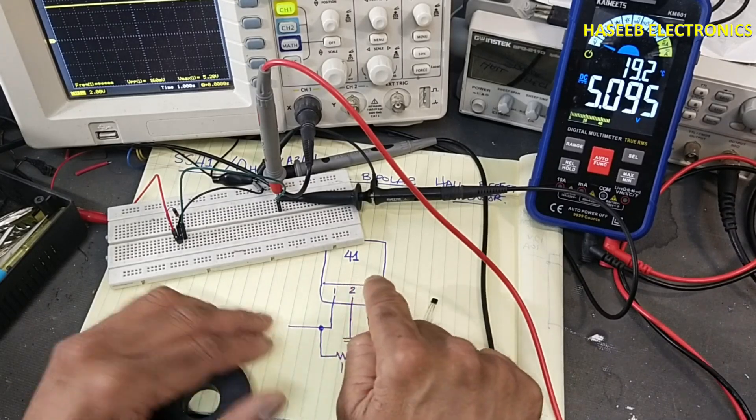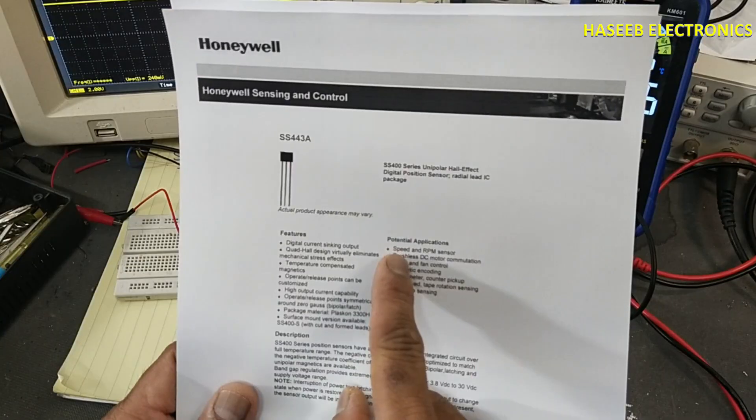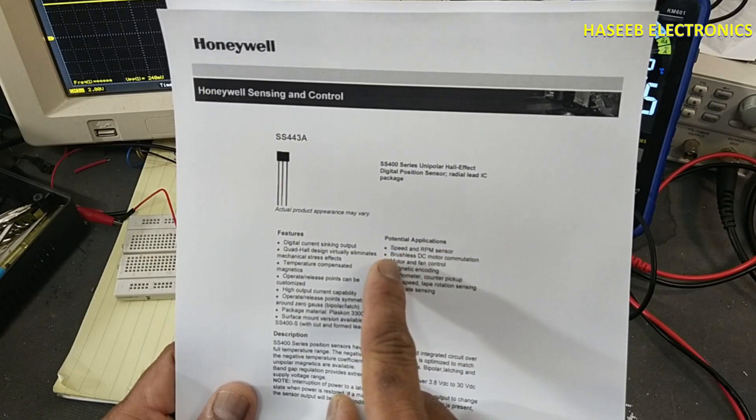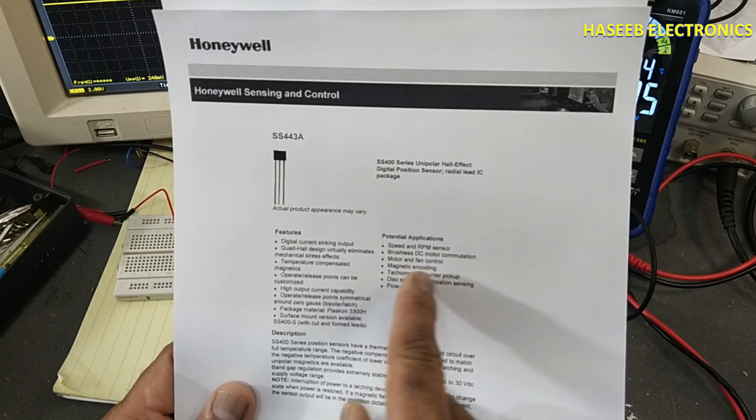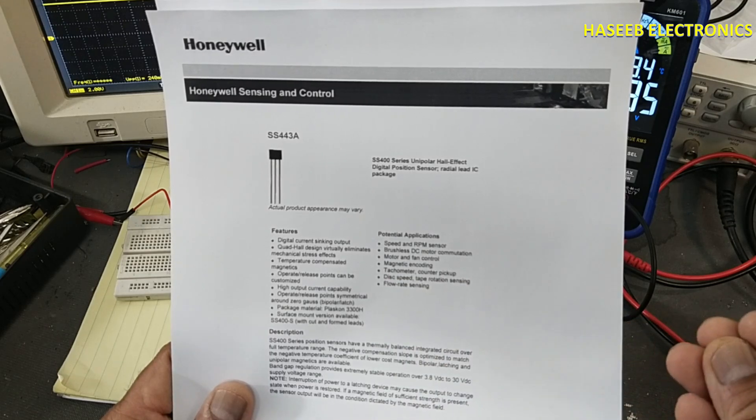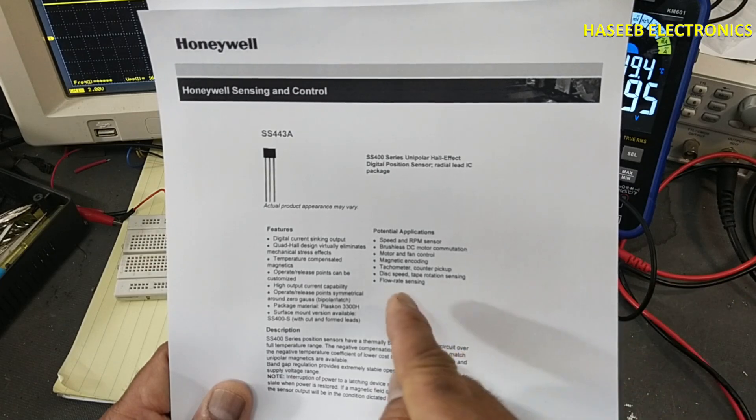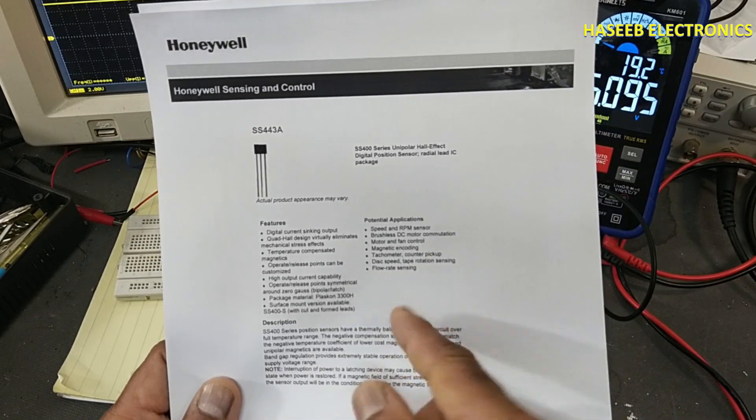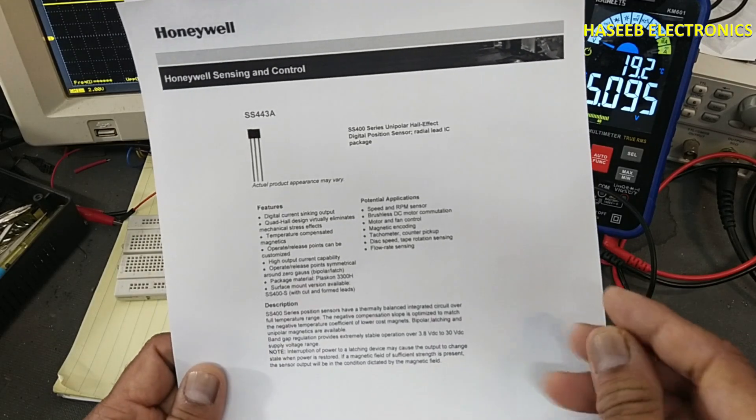Speed and RPM sensor, BLDC motors, motors and fan control, magnetic encoding, tachometers and counter pickups, disk speed, tape rotation sensing, and flow rate sensing. It is also used in fuel pumps for measuring flow control.